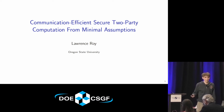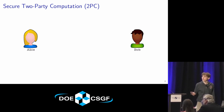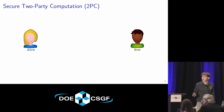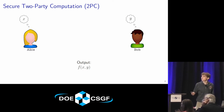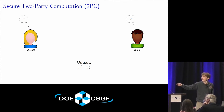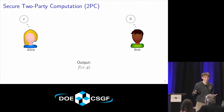My research is mainly focused on secure two-party computation. Here we have Alice and Bob, the intrepid cryptographers. They want to compute securely. Alice has an input x and Bob has an input y. Together they want to compute some function f of x and y without ever leaking to each other what x and y are — they want to keep them secret from each other.